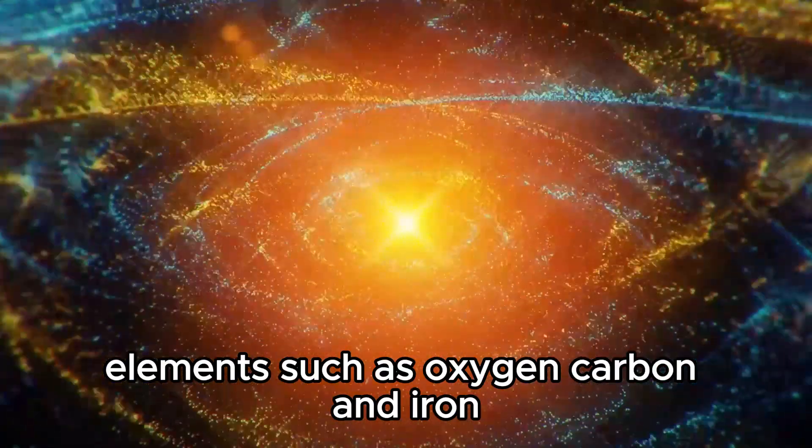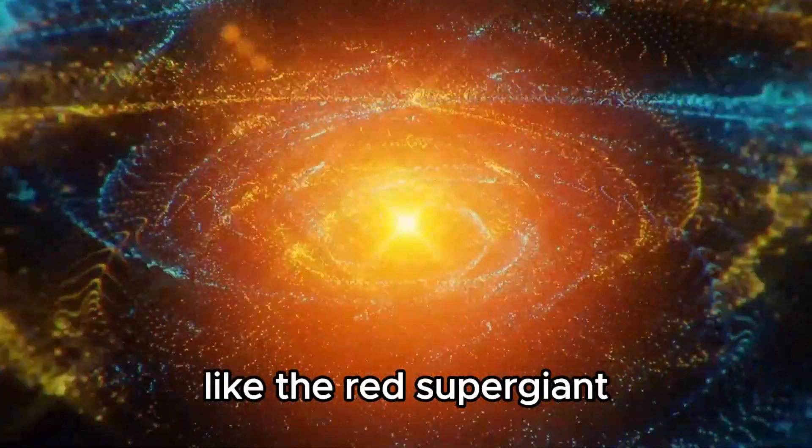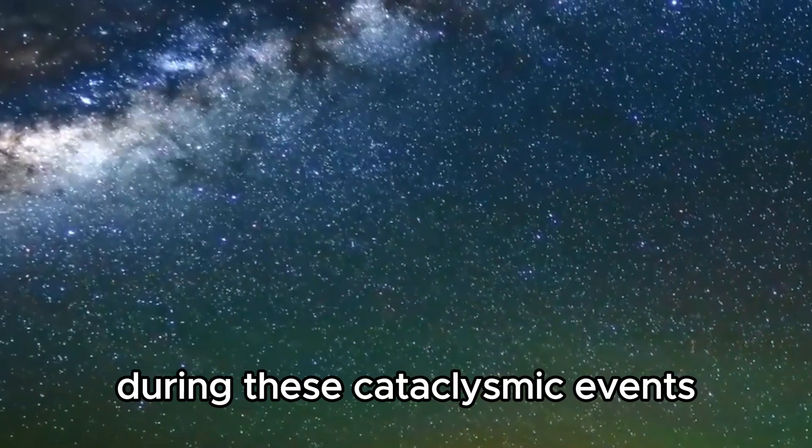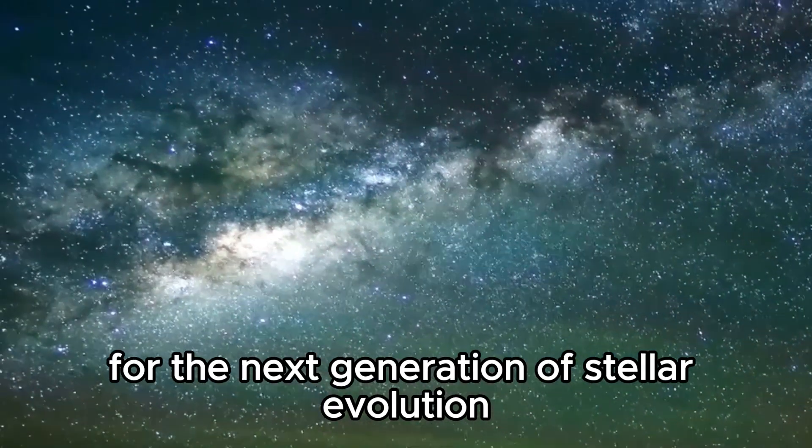Elements such as oxygen, carbon, and iron, forged in the fiery crucibles of stars like the red supergiant are scattered across the cosmos during these cataclysmic events, enriching the interstellar medium and setting the stage for the next generation of stellar evolution.